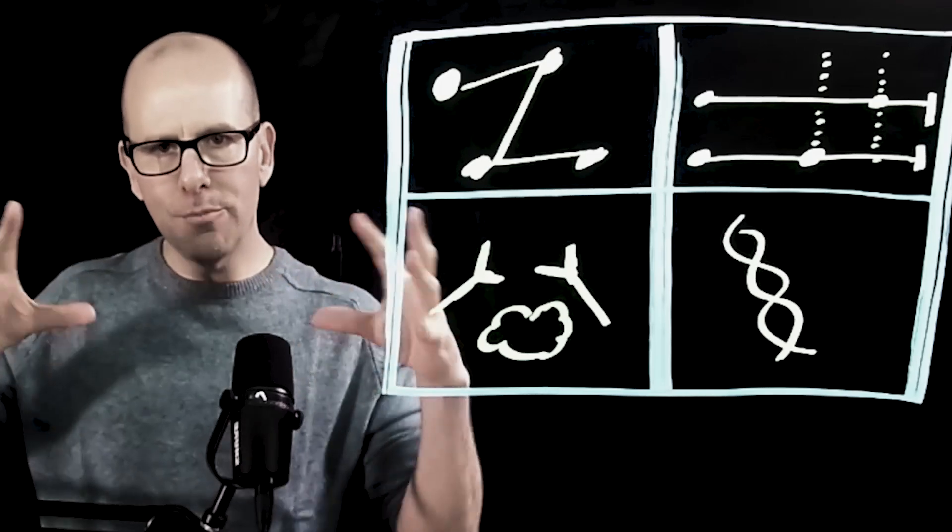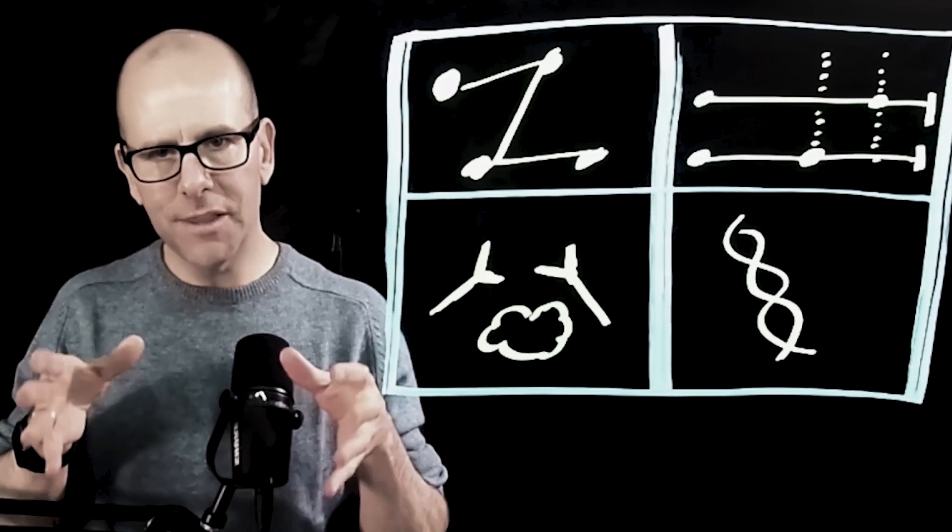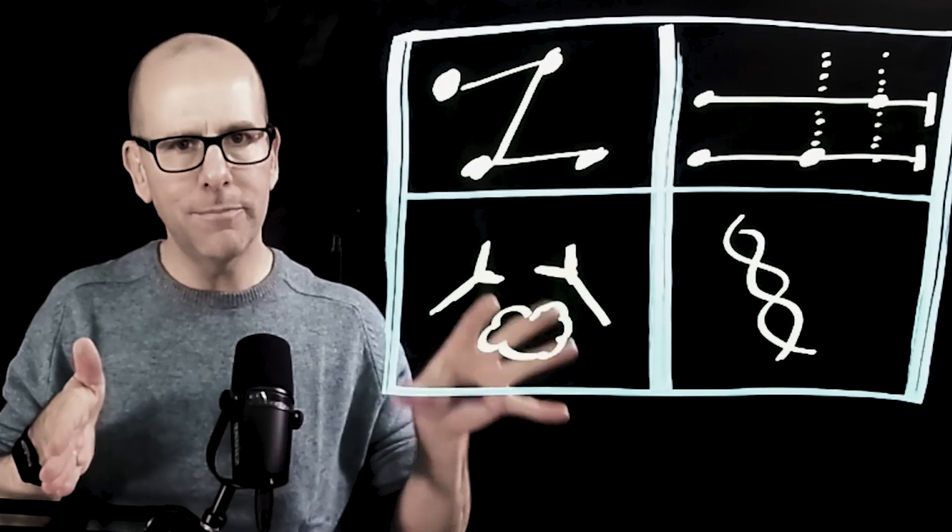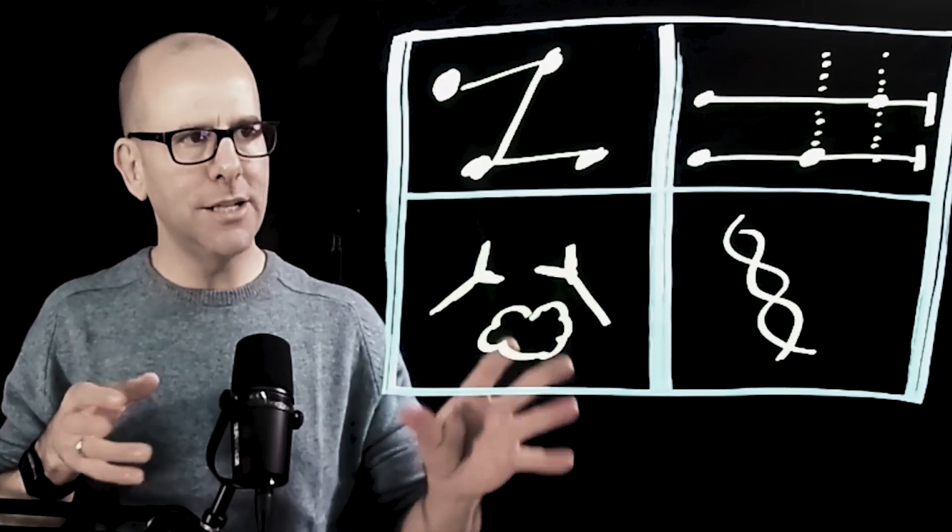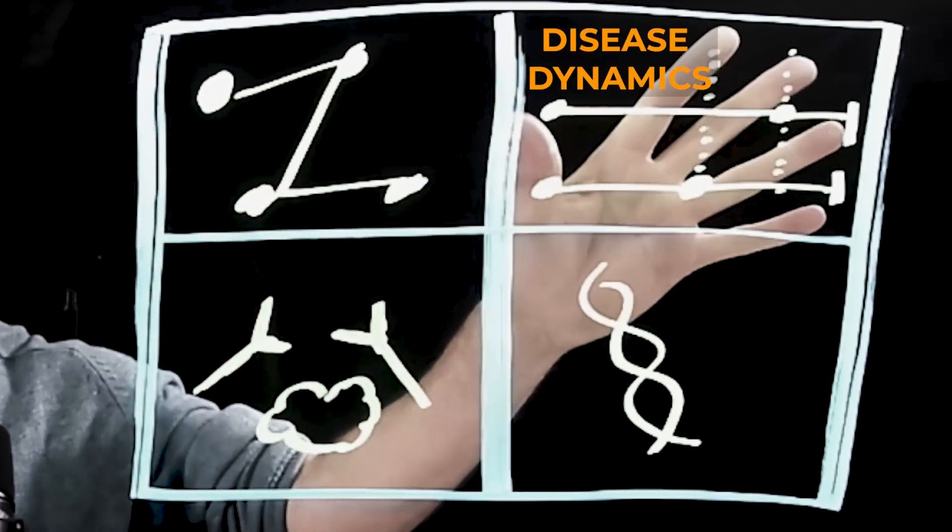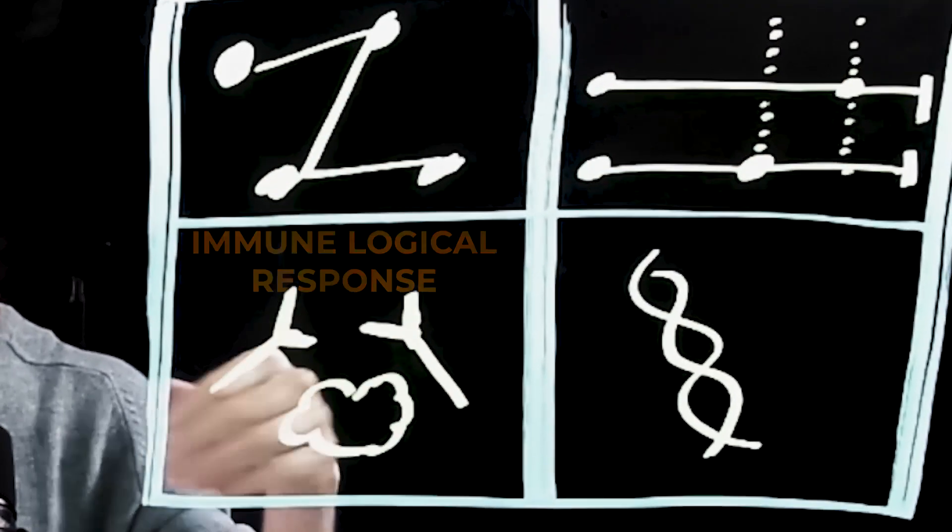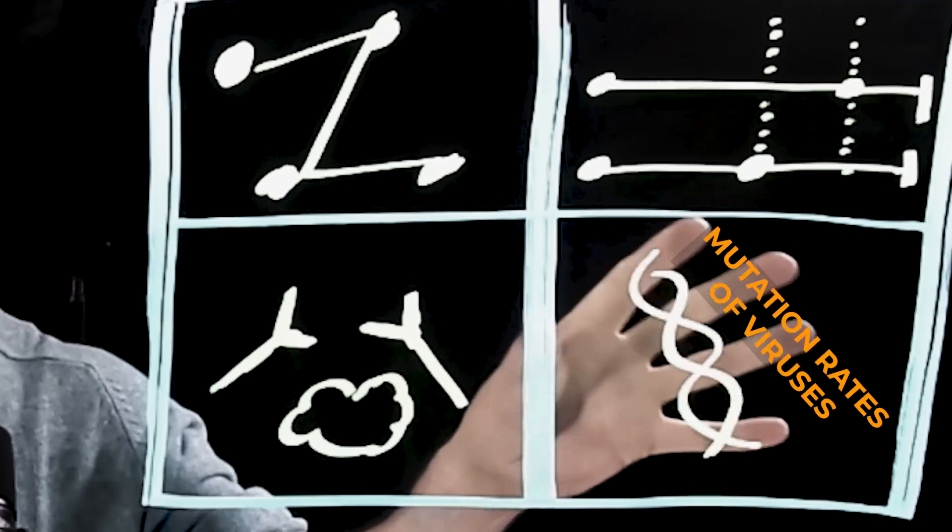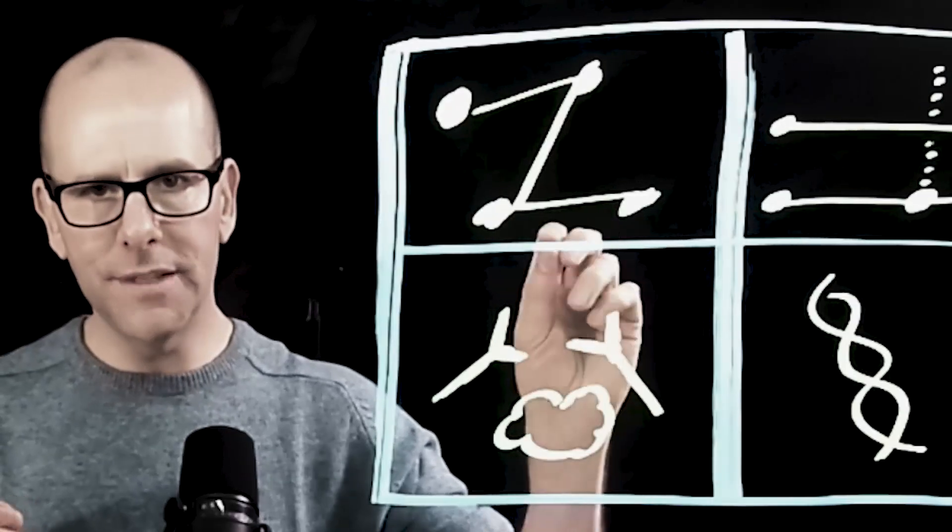So there's four sort of domains or quadrants that we need to think about when we think about the possible impact of a pathogen in terms of pandemic potential, and these domains are firstly transmission dynamics, and I'm going to talk about that in a second, disease dynamics, our immunological response, and the mutation rates within the virus, and I'm going to talk about all of these briefly.